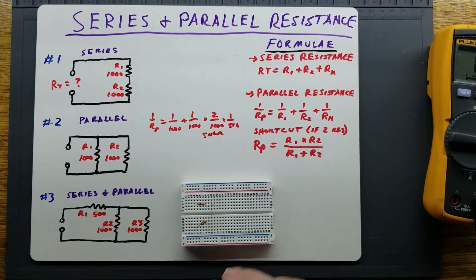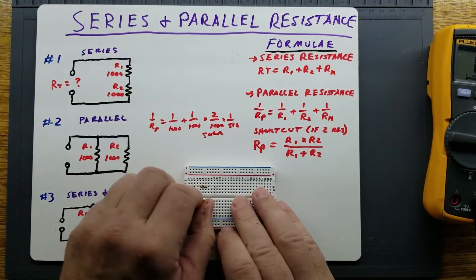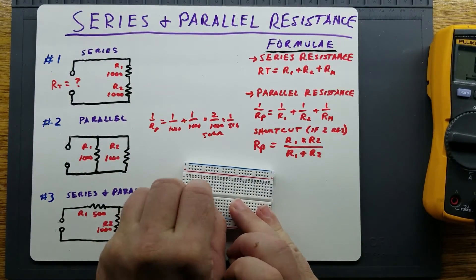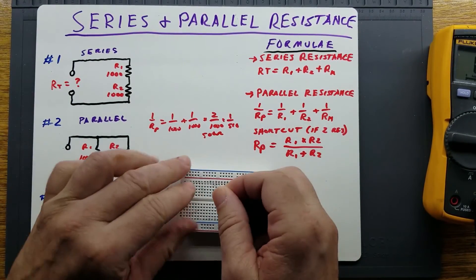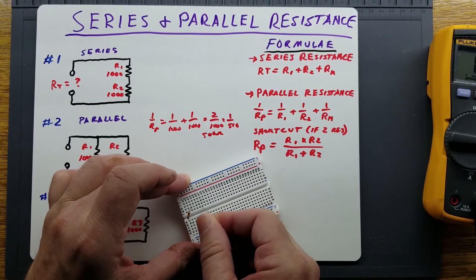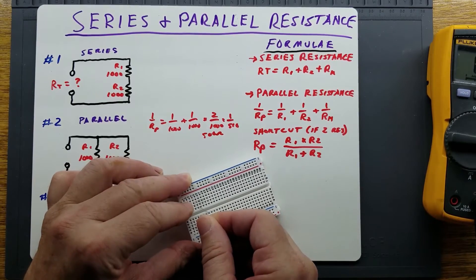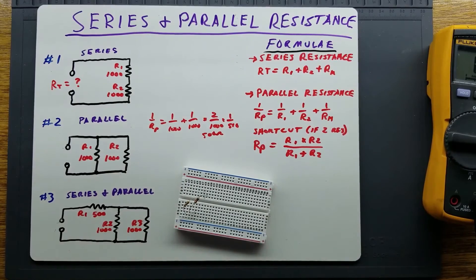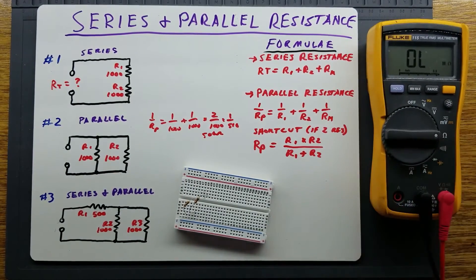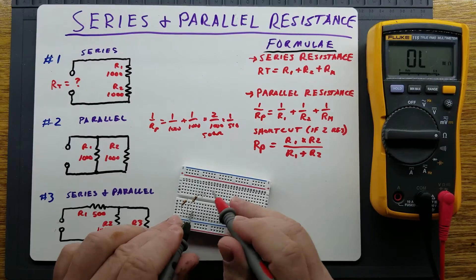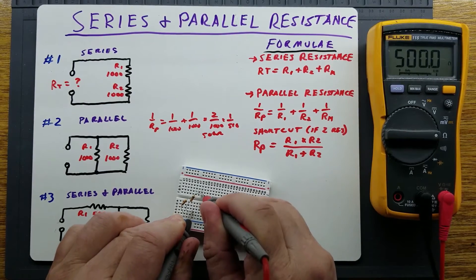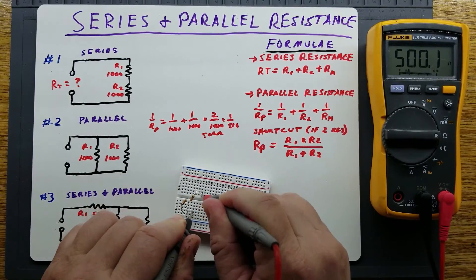If we were to put these two resistors in parallel rather than in series, we should get 500 ohms. Let's do that and measure it — we got almost exactly 500 ohms.